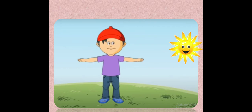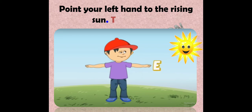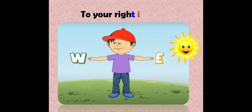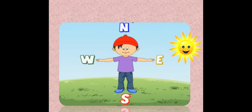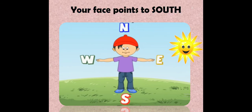If you want to know which direction is north, south, east, or west, stand in an open area in the morning. Point your left hand to the rising sun — this is east. To your right is west, on your back is north, and your face points to the south. In this way you can identify which side is which direction.